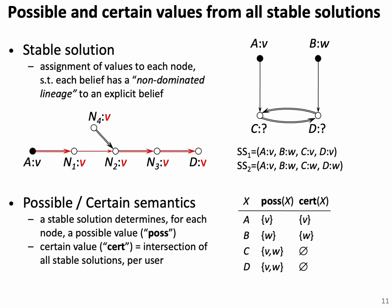Applying this idea to the cycle on the right side, we could assign both D and C the value V because at each step the preferred parent has value V instead of W, giving a lineage back to V. So one stable solution assigns both C and D the value V. Another stable model assigns both W — in this case we still fulfill the condition that each value can be traced back to an explicit belief with a non-dominating lineage. We further propose a possible/certain semantics also known from database repairs. Each stable solution determines for each node a possible value, and certain values are the intersection of all stable solutions per user. Since C can have values V and W, the certain solution for C is the empty set.